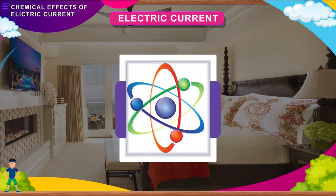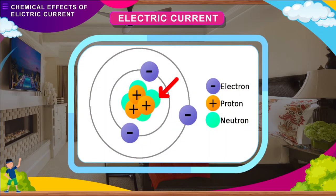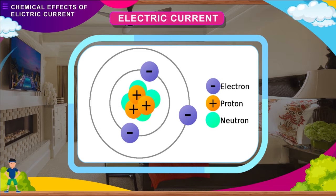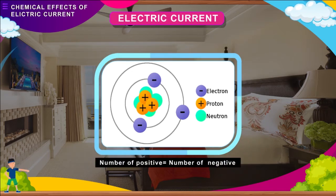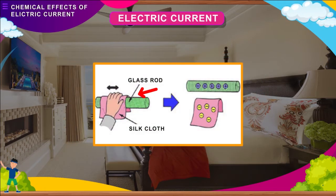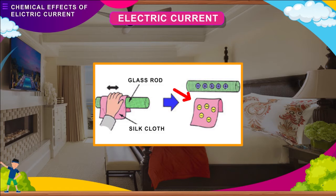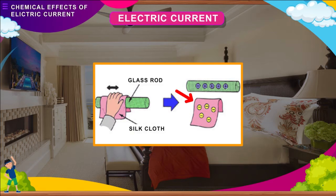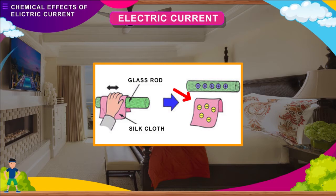An atom is electrically neutral and is made up of positively and negatively charged particles. The positively charged particles called protons are heavy and remain fixed in their position. The negatively charged particles called electrons are lighter and freely move about. The number of positive and negative charged particles in an atom are equal. When a glass rod is rubbed on a piece of silk, some electrons from the glass rod get transferred to the silk cloth. Thus, the glass rod becomes deficient in electrons and acquires a positive charge, while the silk cloth gains excess electrons and acquires an equal negative charge.